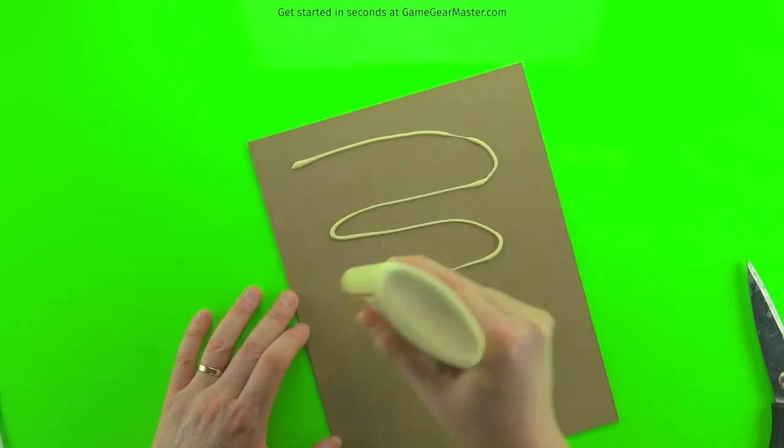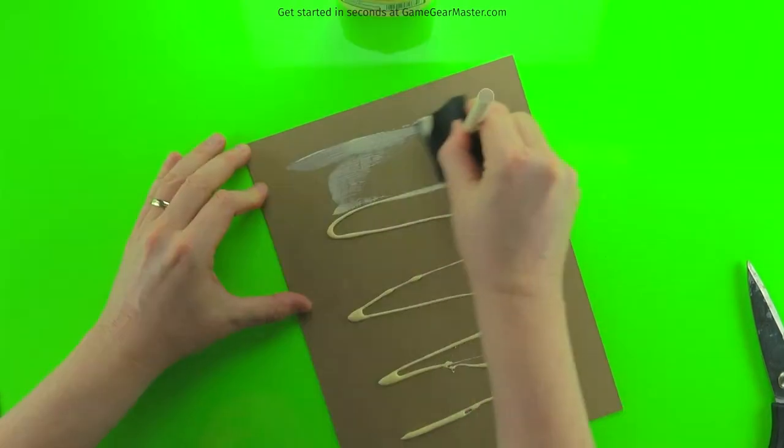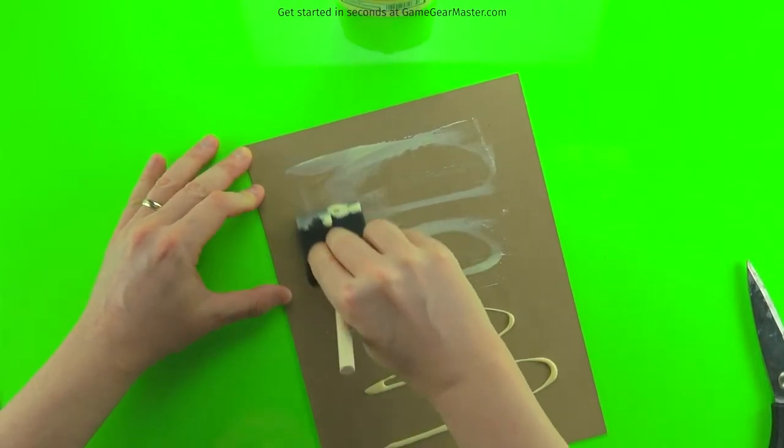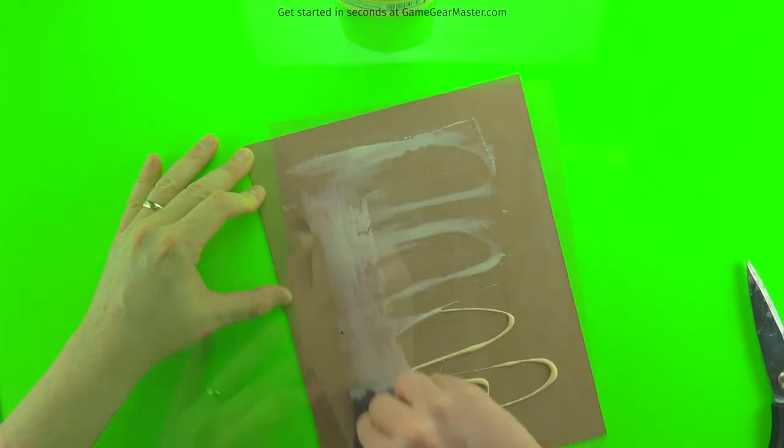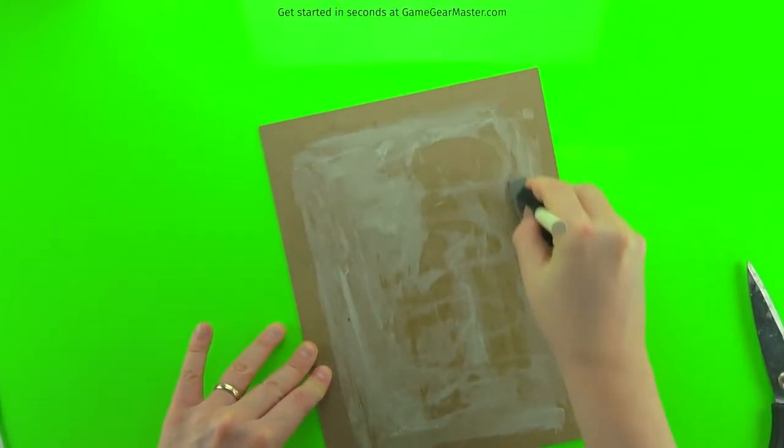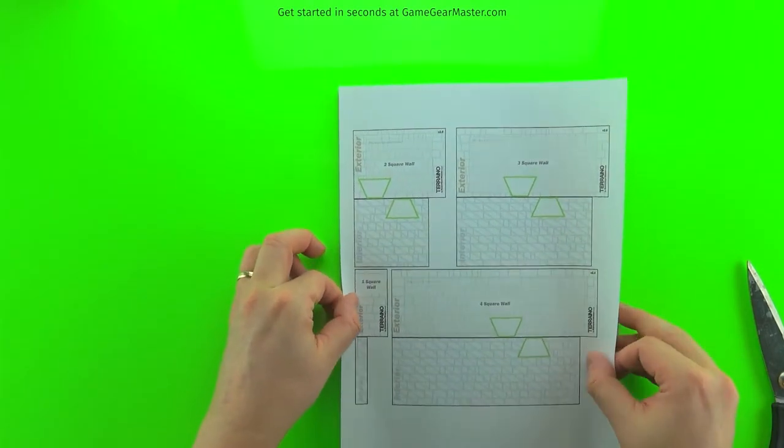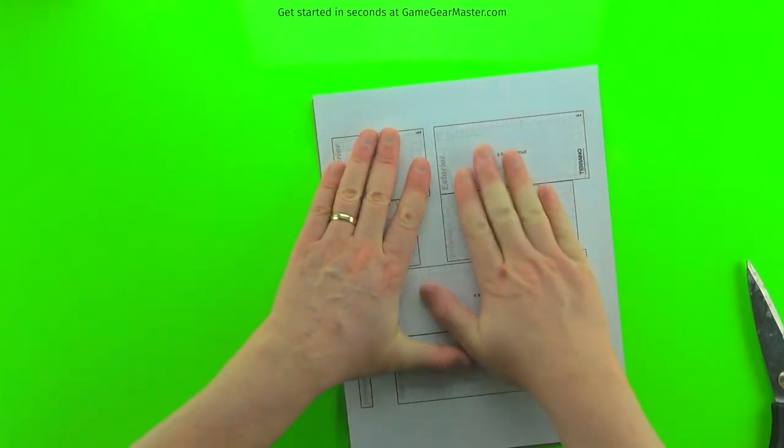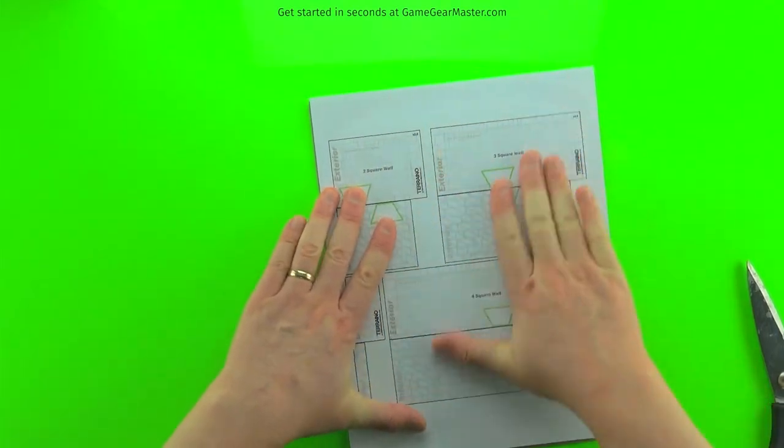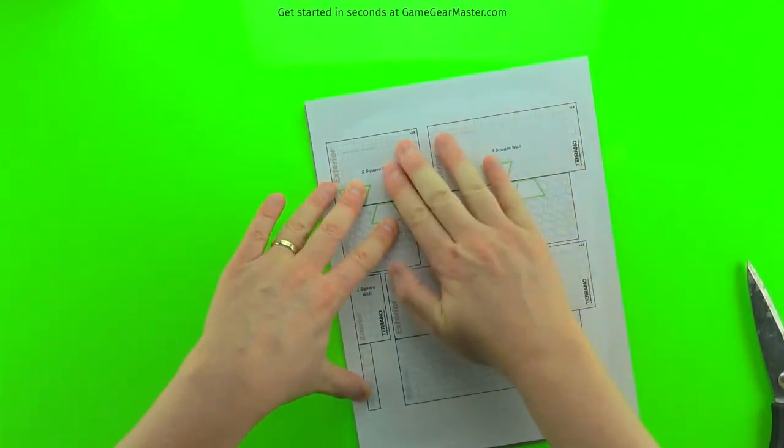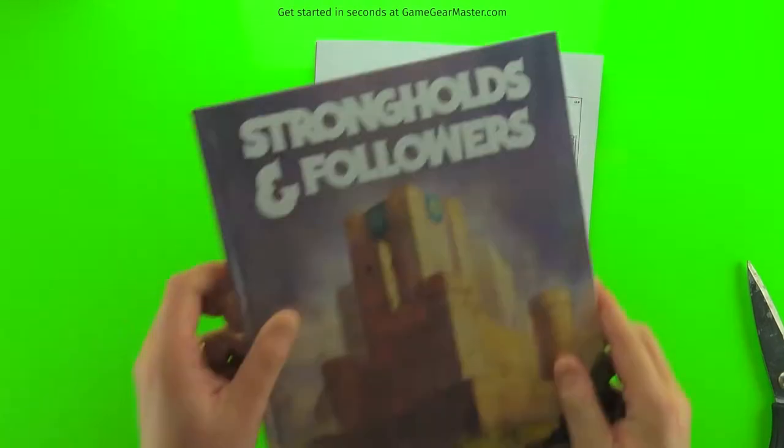If you're going to use Titebond, definitely use a sponge brush to smear it out and make a nice even coat onto the cardboard. And here I'm using the chipboard that's available at GameGearMaster.com store. You can already see that the cardboard is kind of wanting to warp a little bit. It's because there's a lot of moisture in the Titebond. But what we'll do is after we put this on there we'll just put a book on top and let it dry.